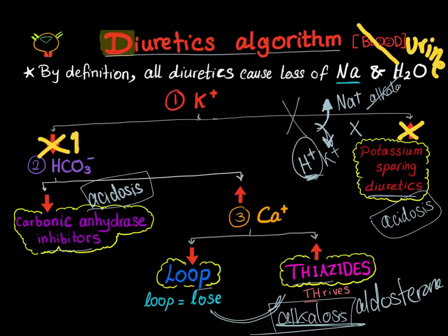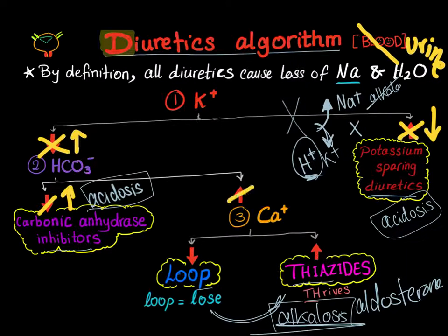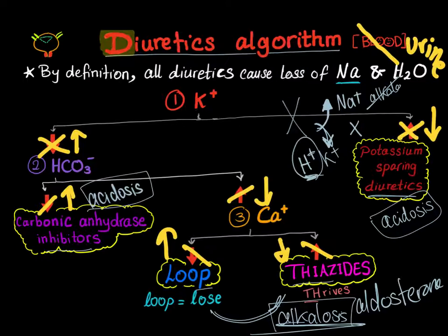All arrows are reversed because when an electrolyte is increased in the urine, it will be decreased in the blood, and vice versa — when it's decreased in the urine, it will be increased in the blood. So they go in opposite directions: urine versus blood.